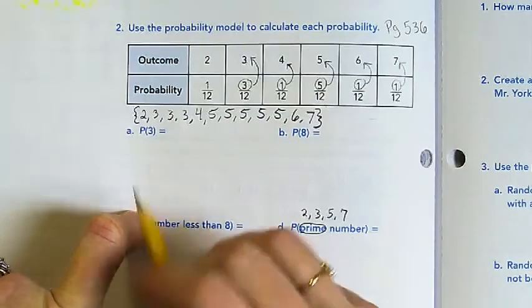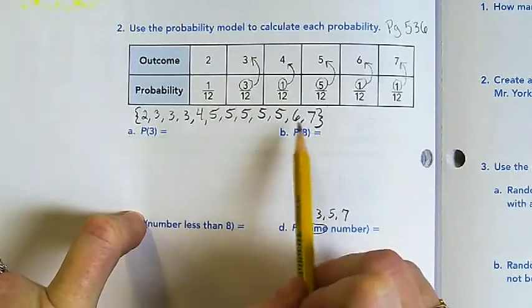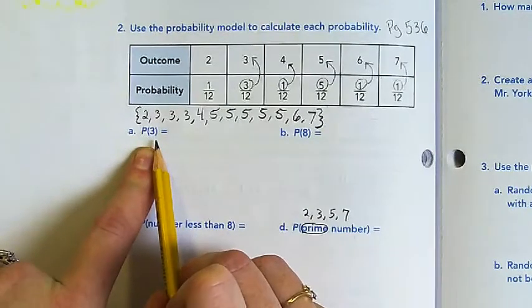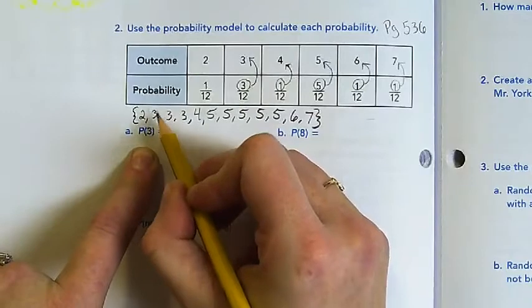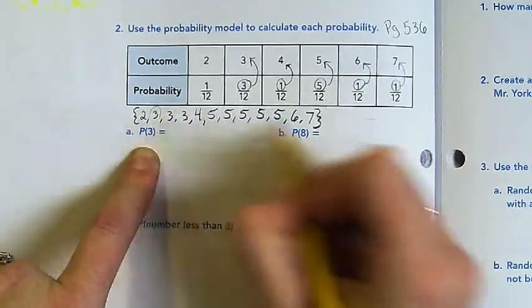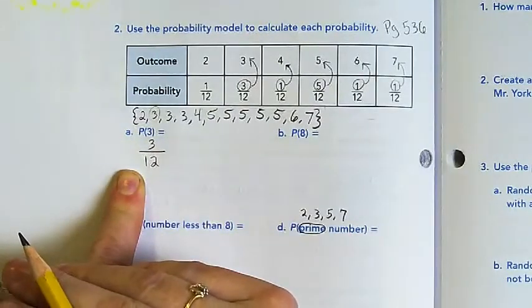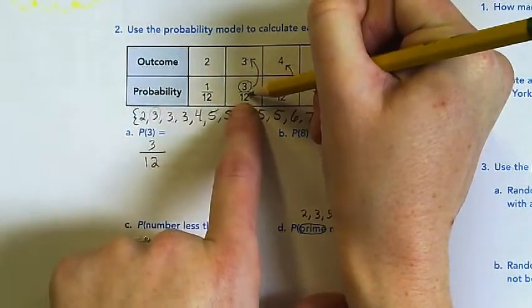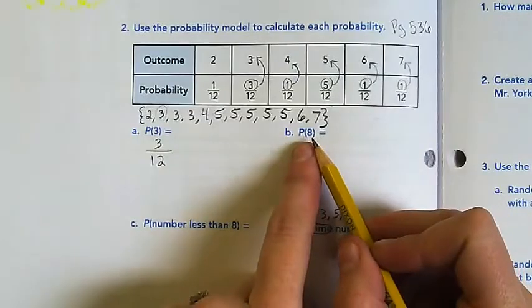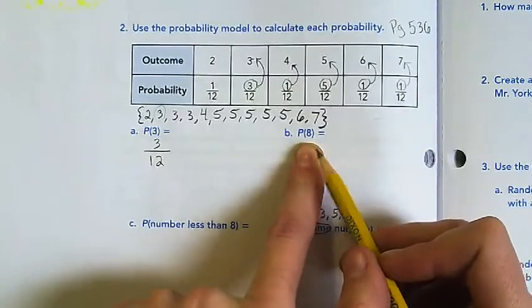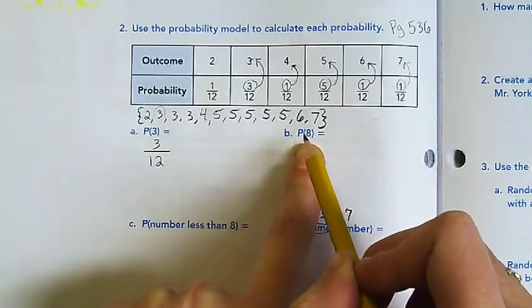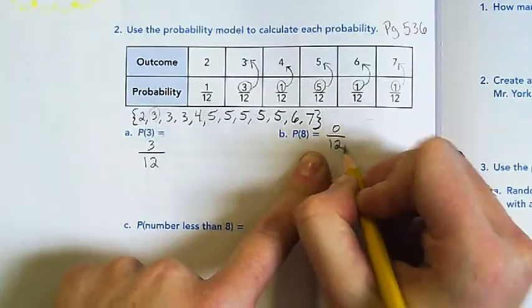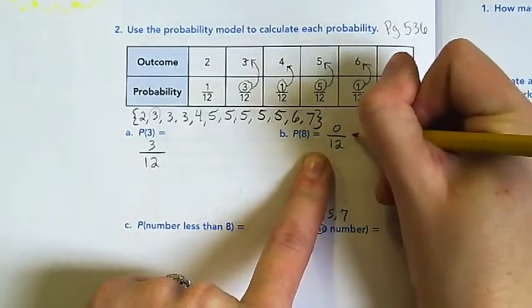Using your probability model or sample space, what's the probability of picking a three? Three twelfths, because there's three out of twelve total. We could also have just looked at the table. What's the probability of getting an eight? Zero out of twelve, because there are no eights in our sample space.